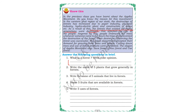Write the name of five animals living in forests. Any five animals — rhinoceros, lion, tiger, elephant, deer. Name five fruits that are available in forests: mango, jackfruit, apple, banana, pineapple.